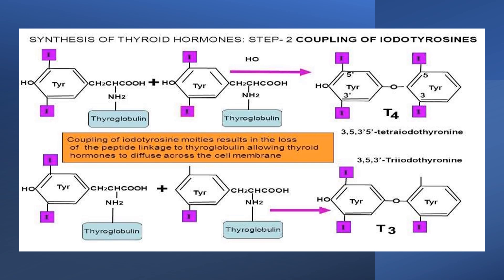Most thyroid hormone in the plasma is T4, but the truly active form is T3. This is why T4 undergoes what is called deiodination at the target cells, by an enzyme called deiodinase, converting T4 into T3 before it begins its action. So T4 acts as a storage form of the hormone, while T3 is the real active form.